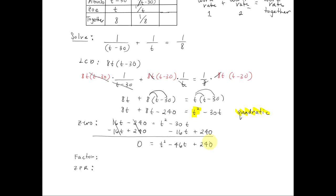Now we just have to factor and then solve. So we have 0 equals t minus 40 times t minus 6. Checking, minus 40 times minus 6 is positive 240.